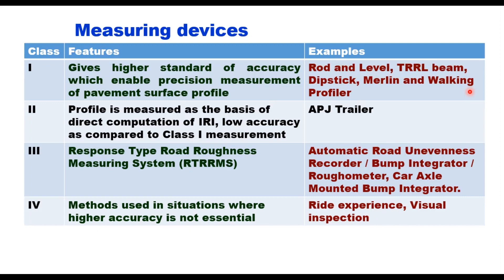There are four classes of roughness measurement devices based on their accuracy and speed of measurement: Class 1, Class 2, Class 3, and Class 4. Class 1 equipment gives the highest standard of accuracy, enabling precision measurement of pavement surface profile. Examples are rod and level, TRLB (similar to 3-meter straight edge), Dipstick, MERLIN, and walking profilometer. Class 2 profile is measured as the basis of direct computation of IRI, with lower accuracy than Class 1.